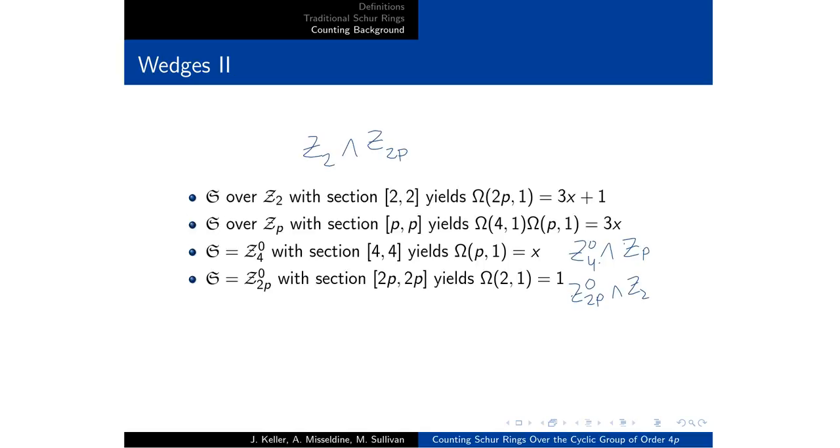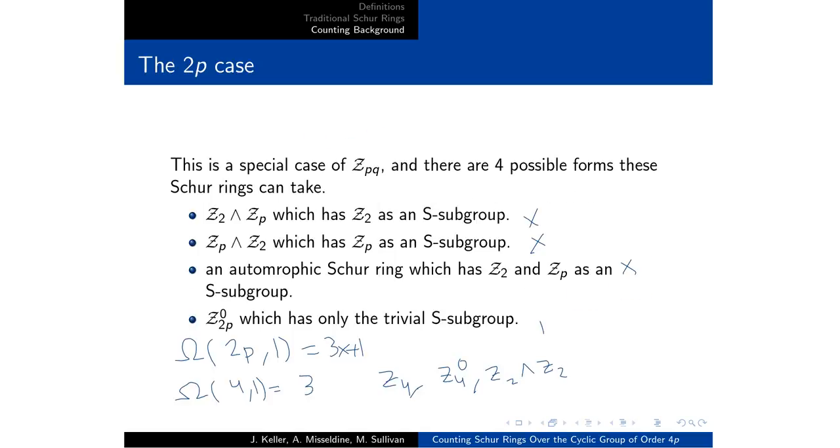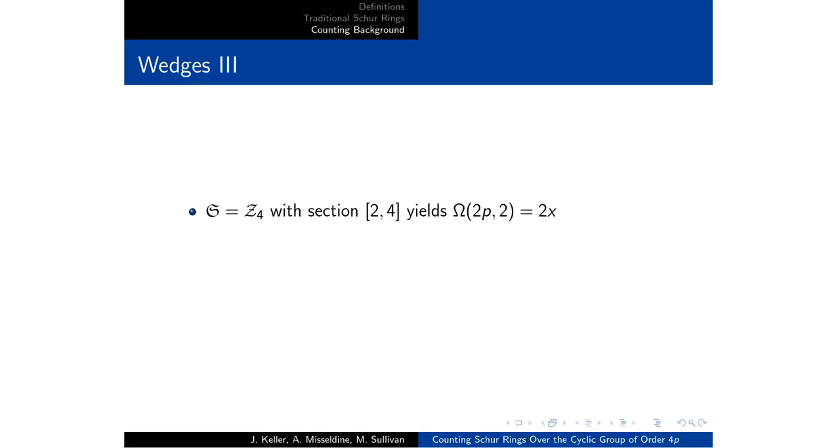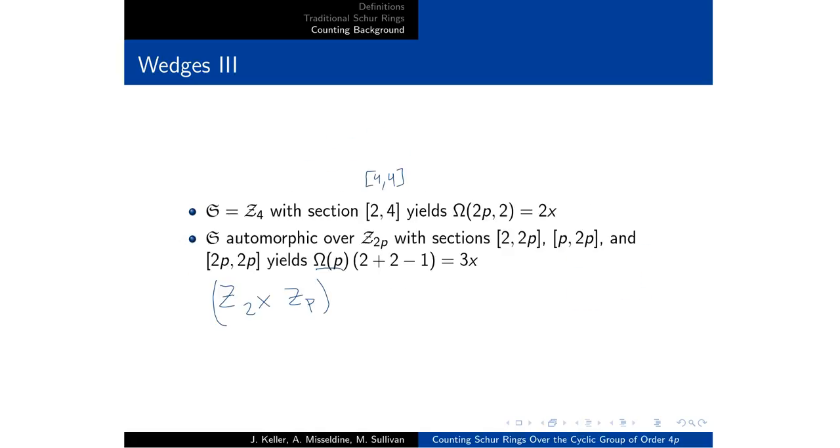And again, if we go back to our 2P case, there's two cases that have ZP as the subgroup, and there's two cases that have Z2 as the S subgroup for a particular choice of Schur ring over ZP. So that's why we get the 3x here. So that gives us all of the wedge product Schur rings.